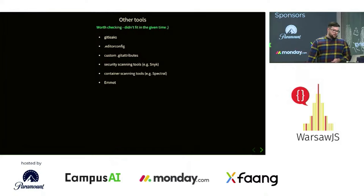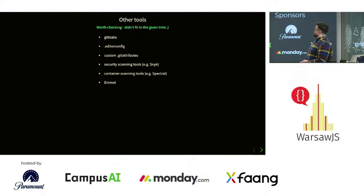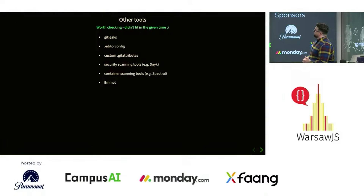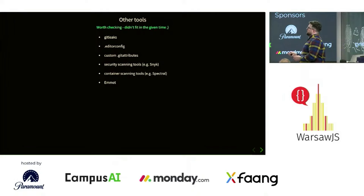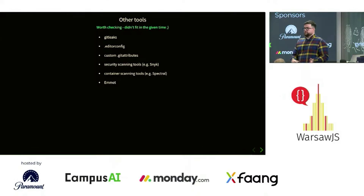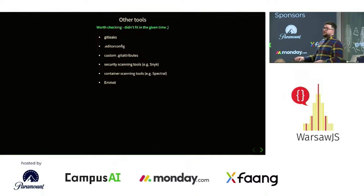Some other tools worth mentioning that I won't have time to fully present: git-leaks — it prevents secrets from leaking out of your repository. You don't want to commit your AWS secret and find out you have $200,000 to pay. EditorConfig is a small tool that applies very basic formatting configuration, but it's very widely supported, meaning you can have the same basic code formatting — like tabs vs. spaces, line endings — across basically every editor, including NeoVim.